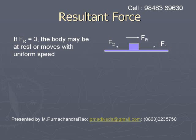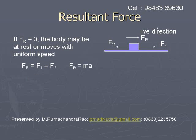Even if it moves with uniform velocity, the resultant force F_r will be zero. If F1 is greater than F2, and we consider the right direction as positive, then F1 will be positive and F2 will be negative. So the total force is F1 minus F2, and the resultant force F_r equals F1 minus F2. This net force gives the acceleration, so F_r equals ma, with acceleration directed to the right.